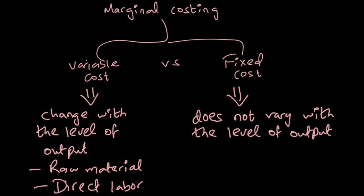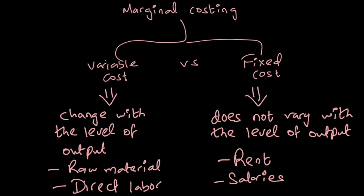The other type of cost a firm will incur is fixed cost. Fixed costs are those costs that do not vary with the level of output, so if I produce one additional unit there will be no impact on such costs. An example would be rent. Salary is another example — if I have a supervisor I'm paying on a monthly basis, whether I produce 100 units or 200 units, his salary will stay the same. That becomes a fixed cost.